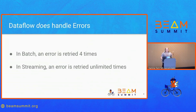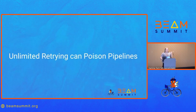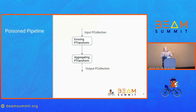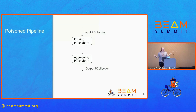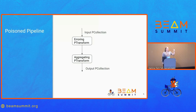Unlimited retries can poison your pipeline in a number of different ways. In a straightforward pipeline with some PCollection piped through a transform that's erroring, those failing elements get retried forever if they're in a permanently failed state, building up and eating your actual processing and CPU resources.